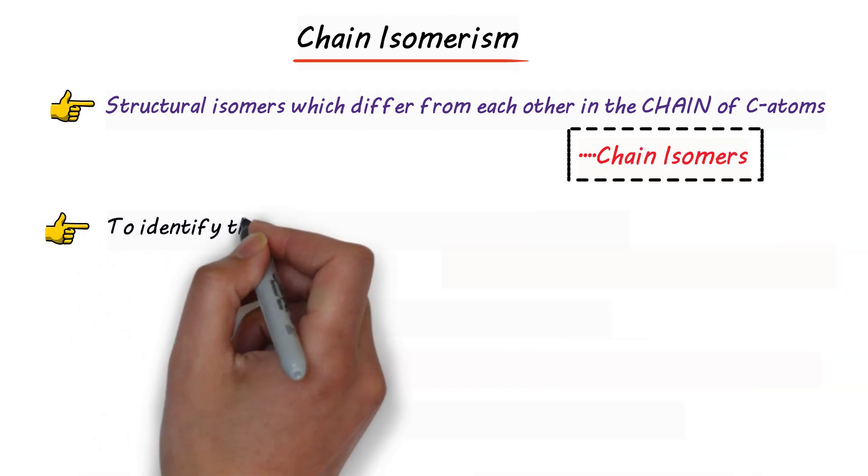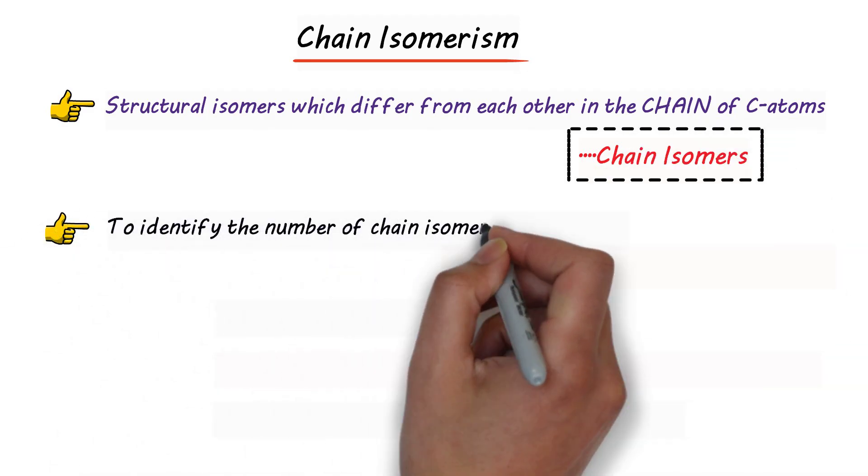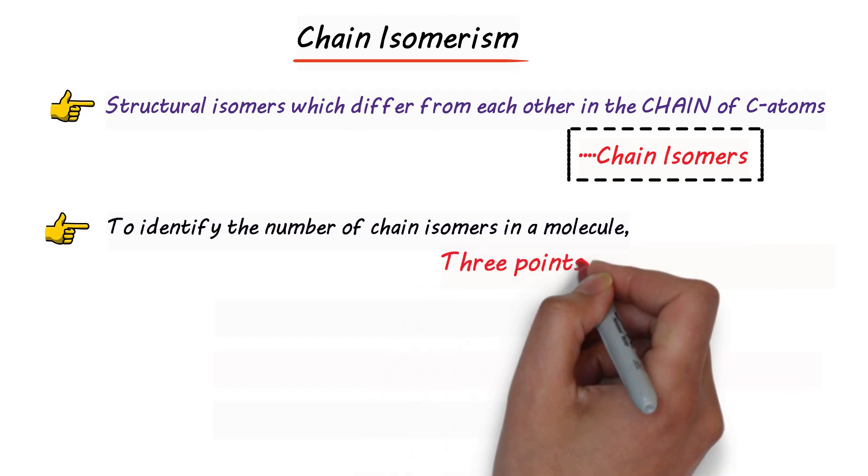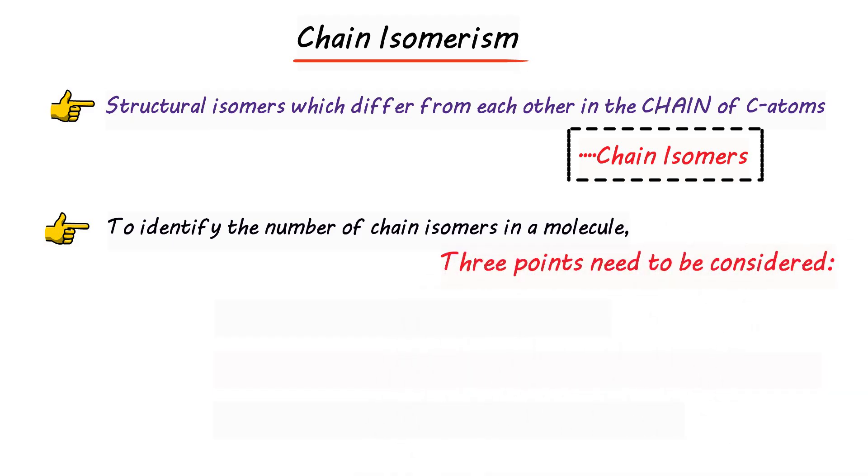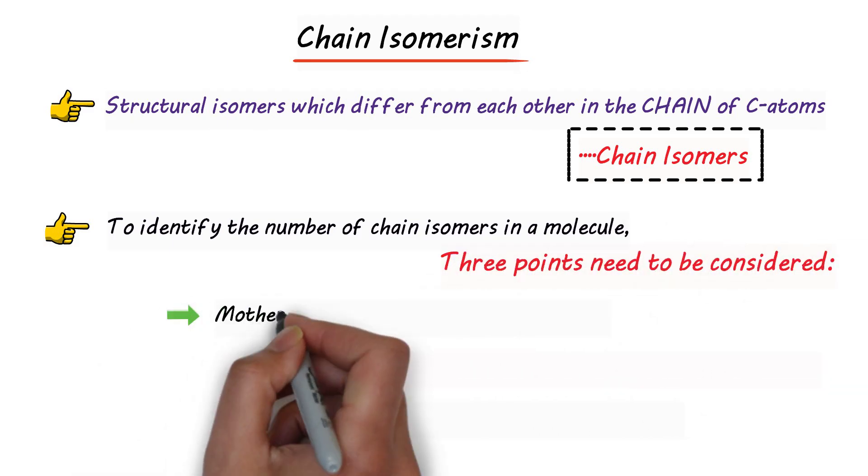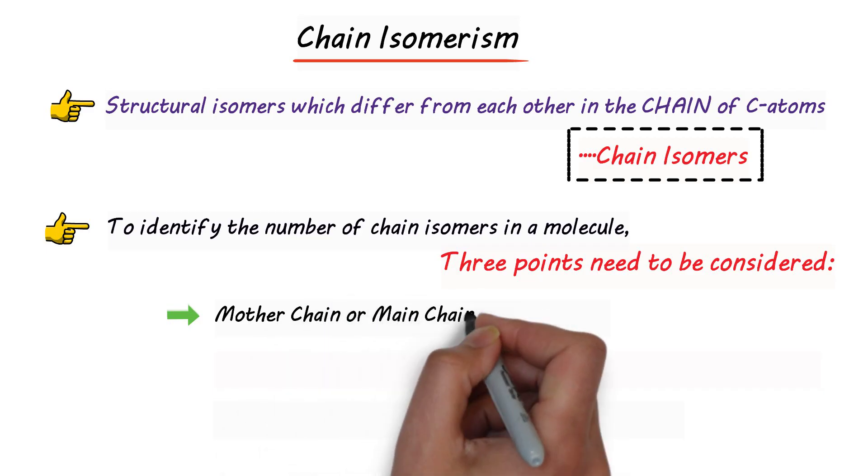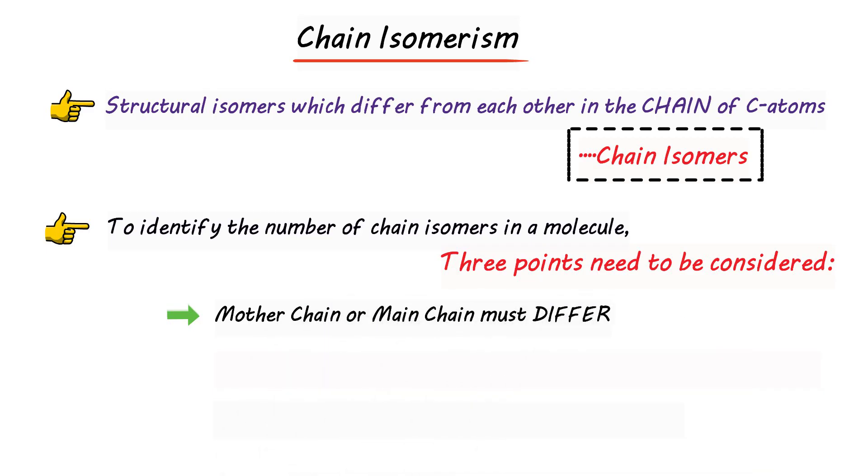Now to identify the number of chain isomers in a molecule, three points need to be considered. First point is mother chain or main chain must differ. So while writing the IUPAC nomenclature of those compounds you can observe whether the mother chain or the main chain differs or not. If they differ then they can be chain isomers.